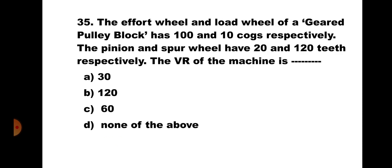Question number 35: The effort wheel and load wheel of a geared pulley block have 100 and 10 cogs respectively. The pinion and spur wheels have 20 and 120 teeth respectively. The VR is: A) 30, B) 120, C) 60, D) none of the above. VR = (100/10) × (120/20) = 10 × 6 = 60. The correct answer is C) 60.